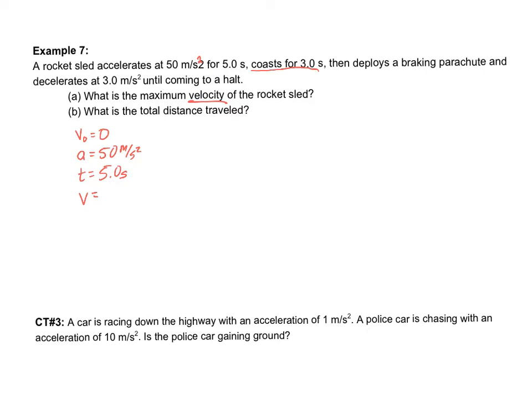During the coasting, the velocity should stay the same. And then after that, the braking parachute pops out, and it slows down. Therefore, the fastest speed should be right here before it starts coasting or while it's coasting.